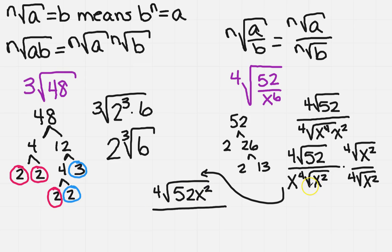And on the bottom, I'm going to have x to the 4th times x squared, which is going to give me the 4th root of 52x squared over x to the number. We're going to add those, so 4 plus 2 is 6.